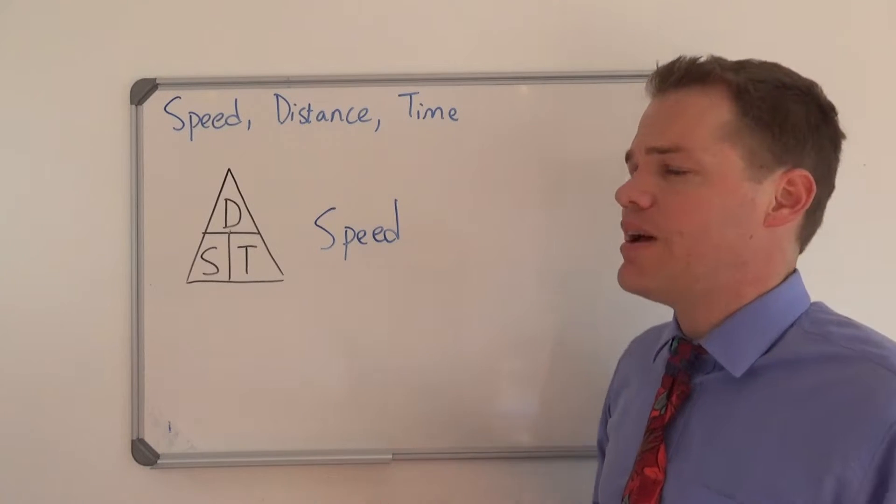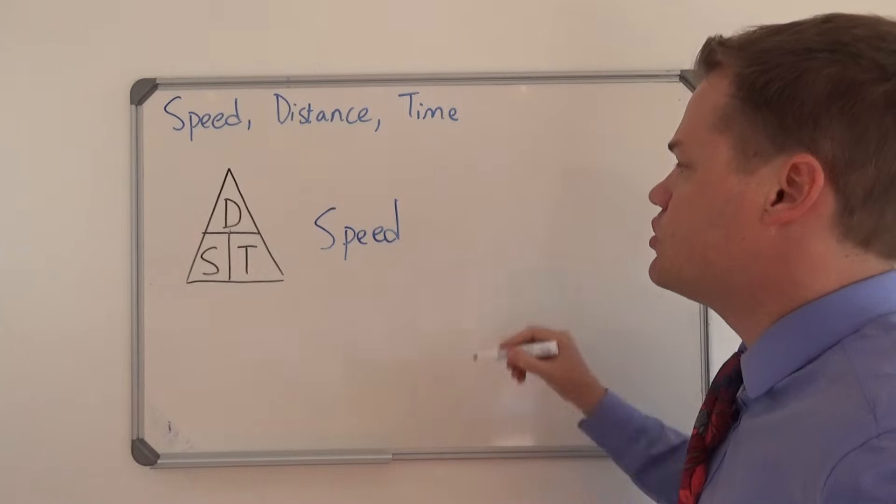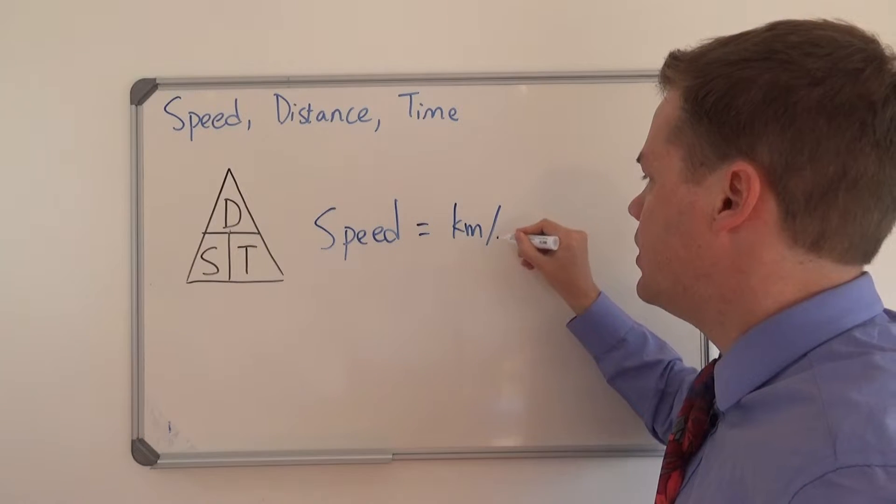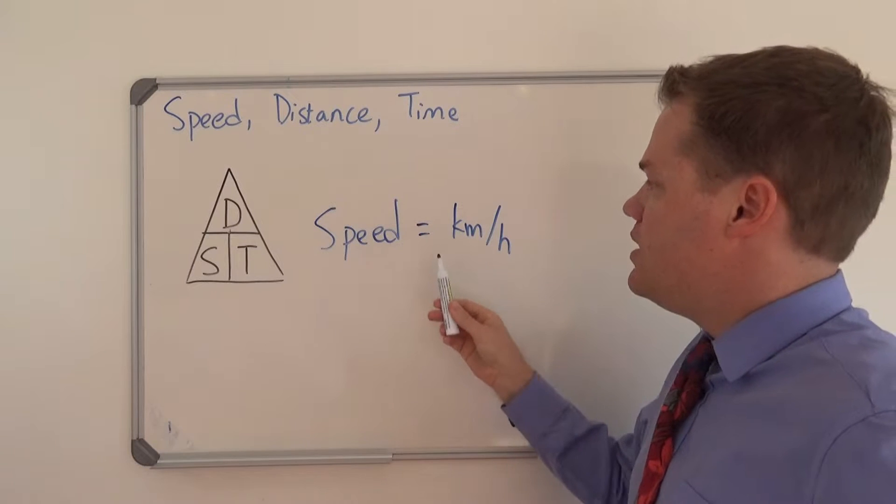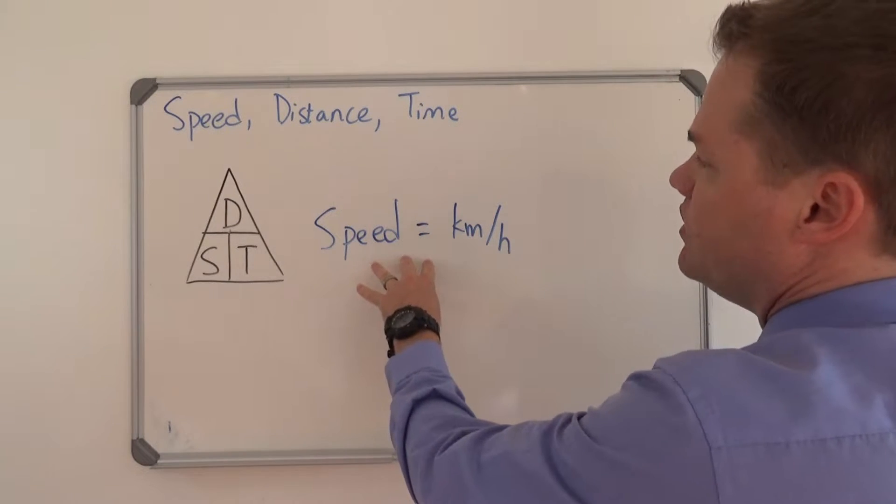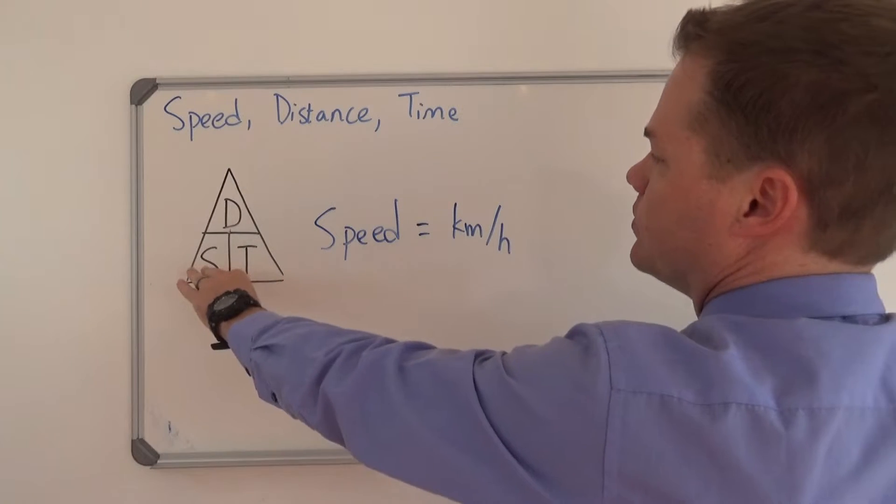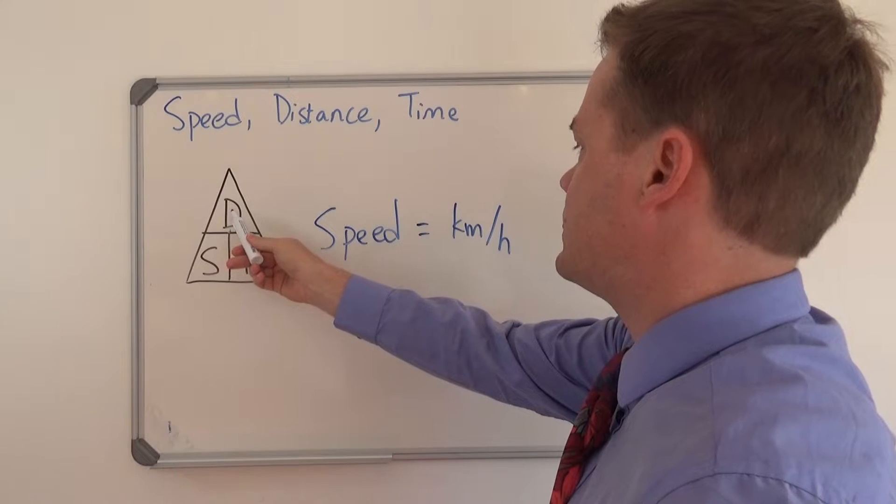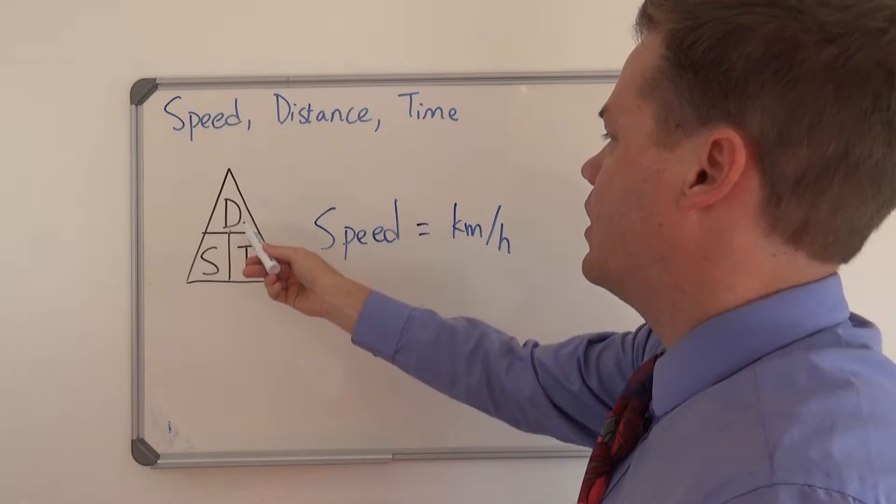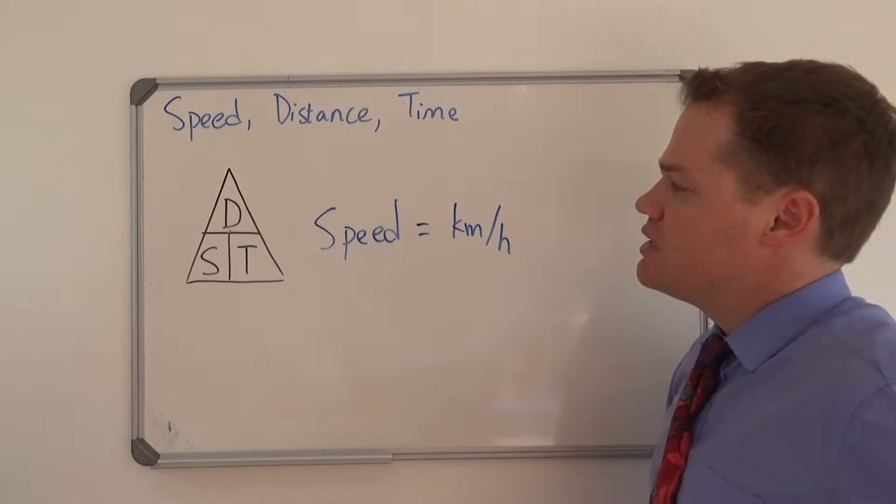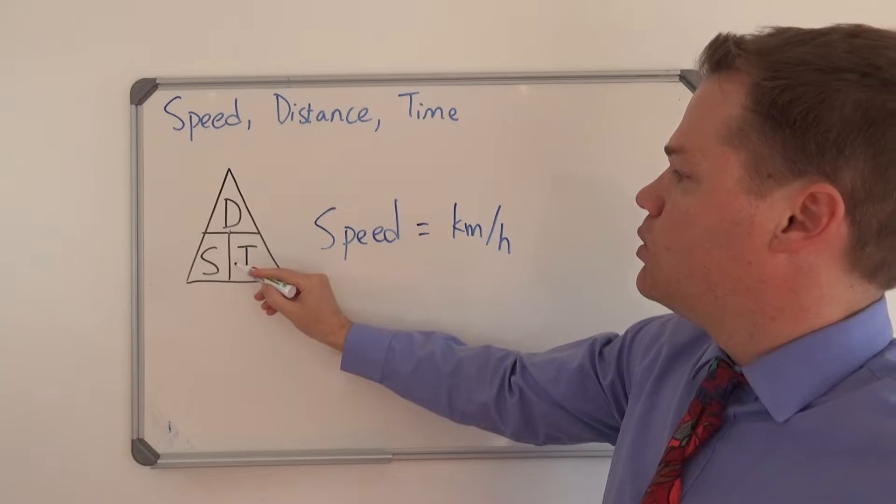It doesn't really matter. The method stays the same. So speed equals kilometers per hour. I wrote it like this on purpose because what we have here is very similar to what we have here. We have speed equals distance (kilometers) over time (hours), so speed will be distance divided by time.